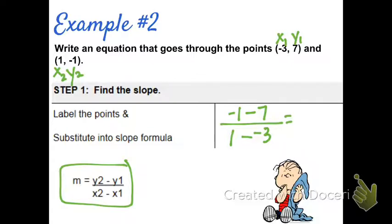Now, negative 1 minus 7 is negative 8, and subtracting a negative number is the same as adding, so this is 1 plus 3, which is 4.